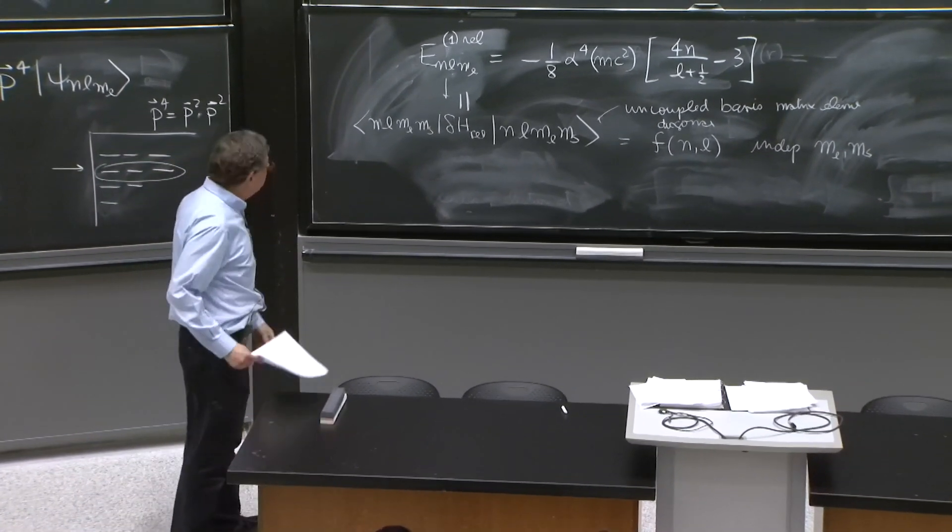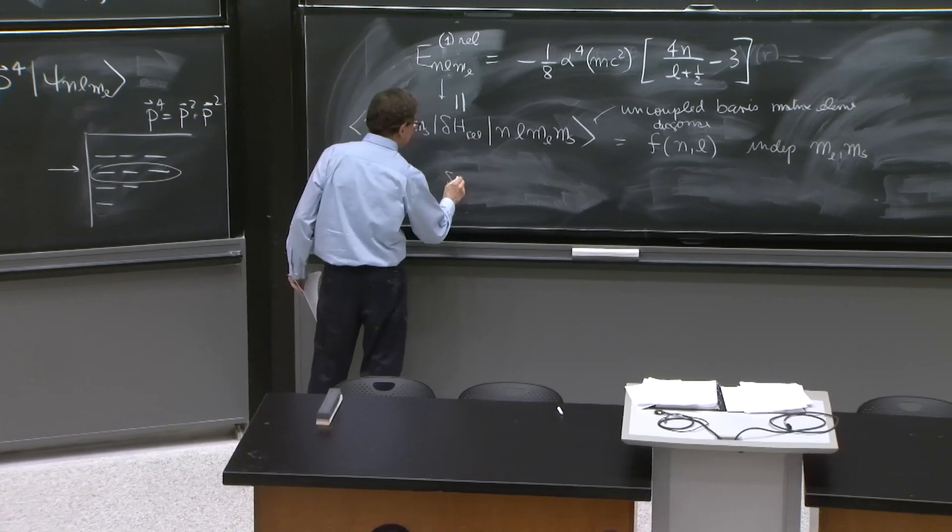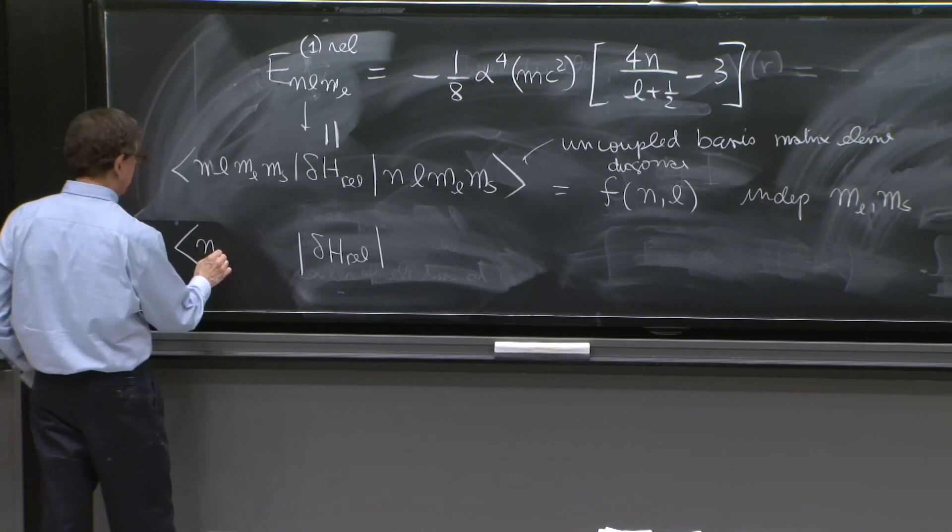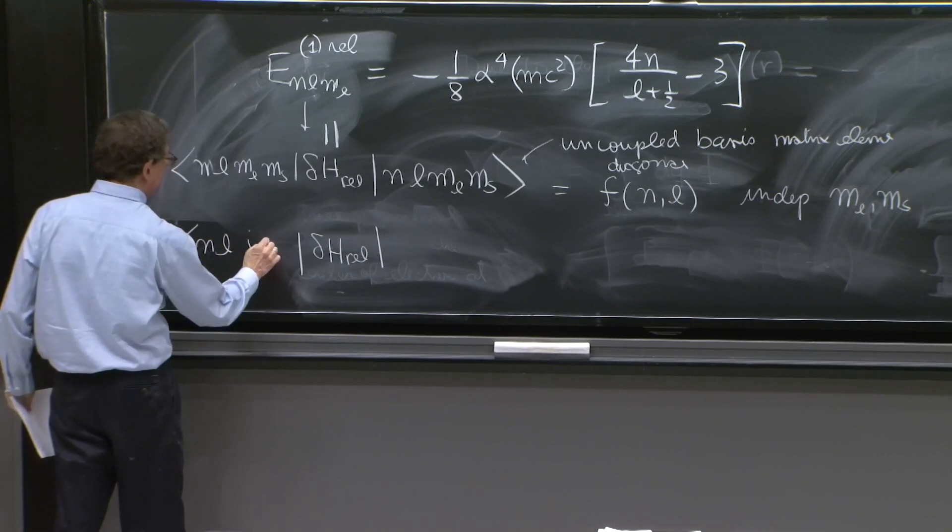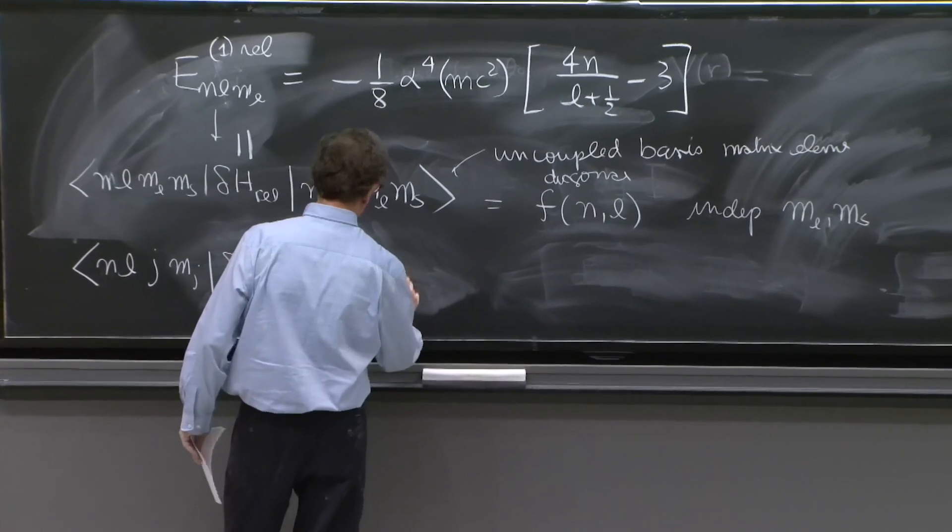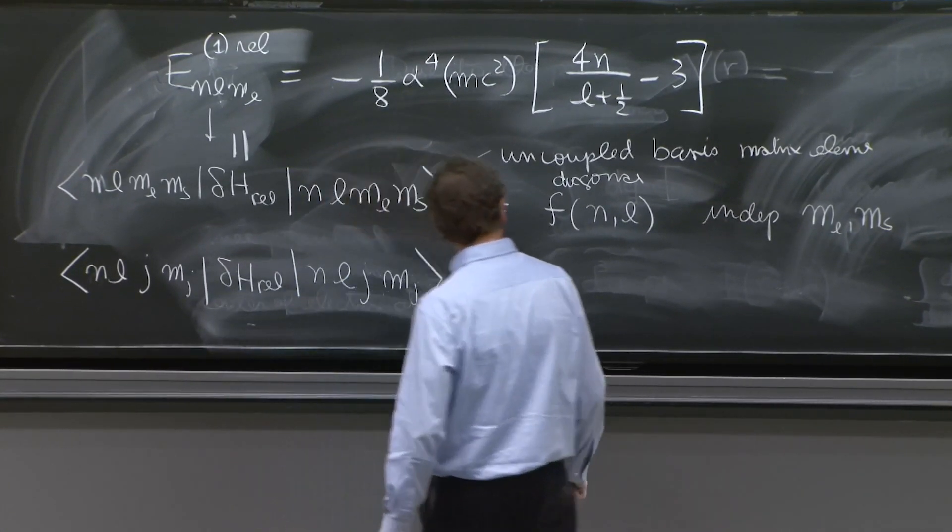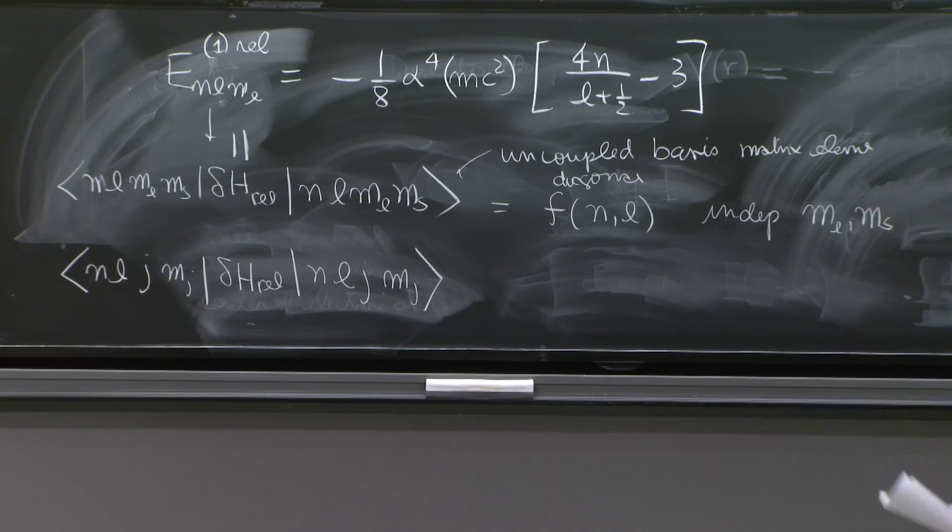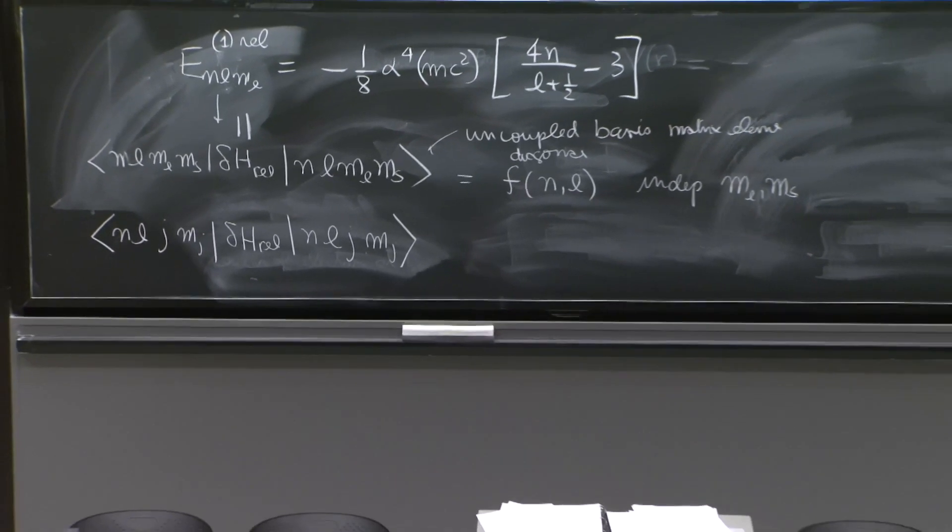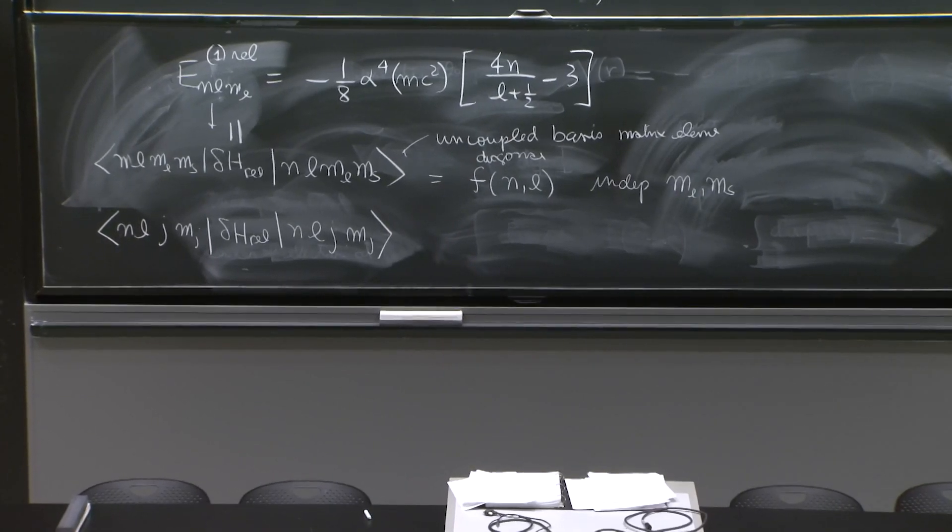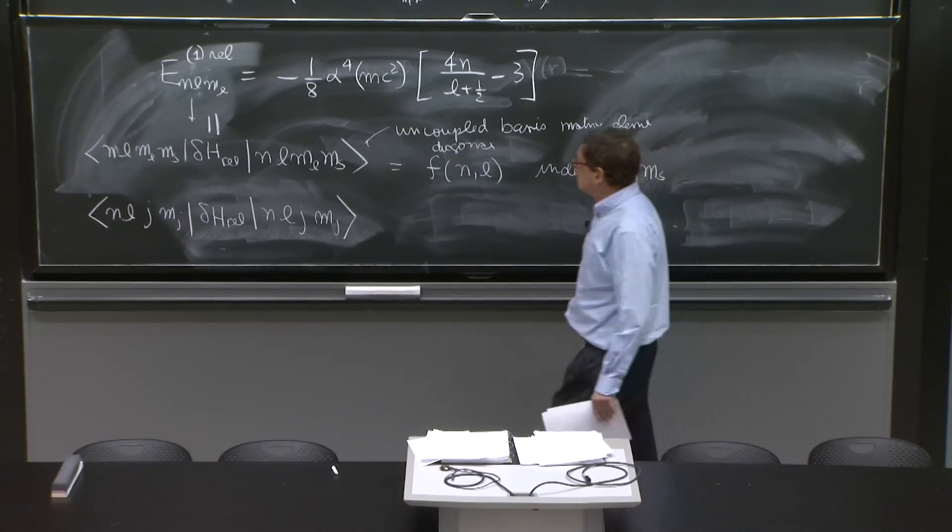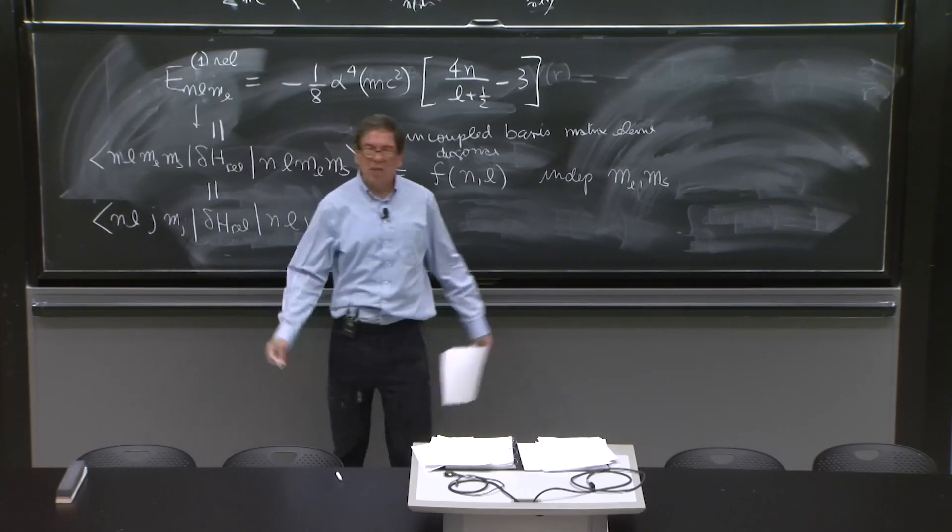OK, that's what we've calculated. So here is the question. We could consider this in the coupled basis. It's nlj mj, nlj mj. And the question is, do I have to recalculate this in the coupled basis or not? And here is an argument that I don't have to recalculate it. So I'm going to claim that this is really equal to that. Just the same.